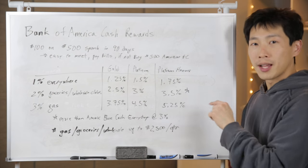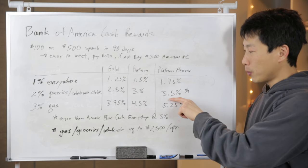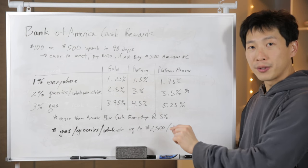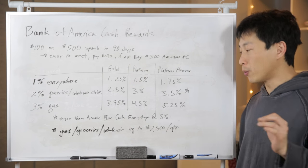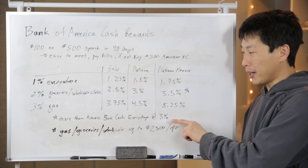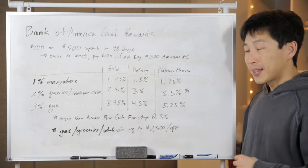Groceries, when you boost 2% by 75%, you end up with 3.5%. People that know about the Amex blue cash everyday card, the normal one, not the preferred one, gets you 3% on groceries. So 3.5% is actually better than that Amex blue one.